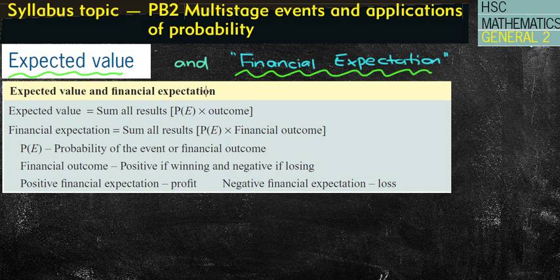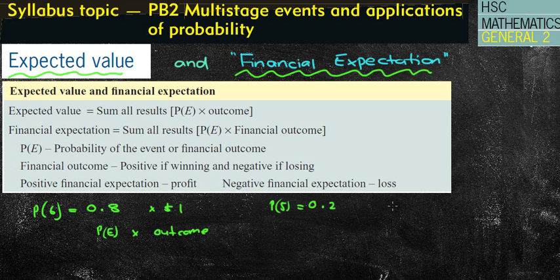So expected value and financial expectation, basically we're looking at the sum of all the results of the probability that the event occurs times the outcome. For example, the probability of getting a 6 might be 0.8, and you might win a dollar for getting a 6. Therefore, you do the probability of the event occurring, which is 0.8, and we times it by the outcome, in that case it would be winning $1. If the probability of getting a 5 is 0.2, and you lose 20 cents, you'll be doing 0.2 times negative 0.2, and that will tell you the financial expectation of getting a 5.